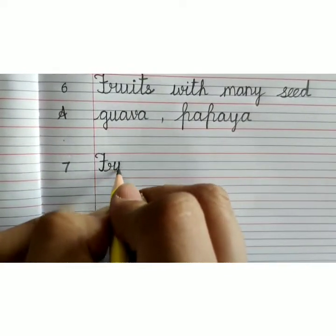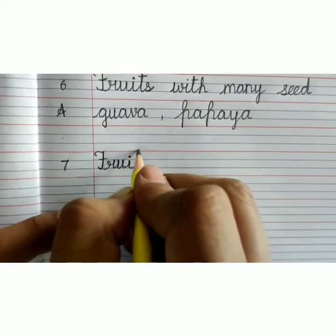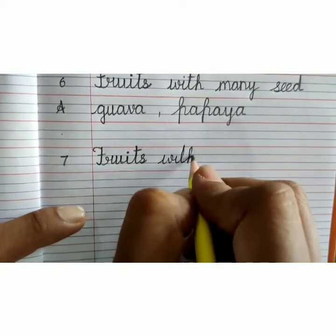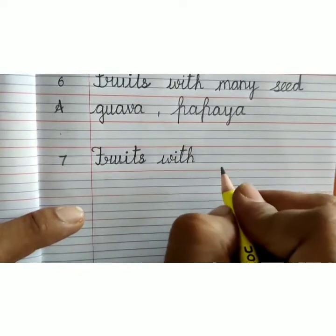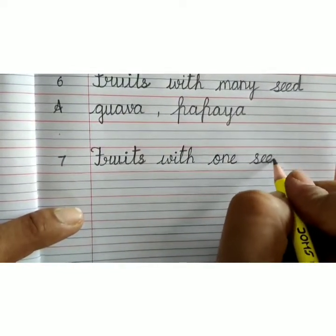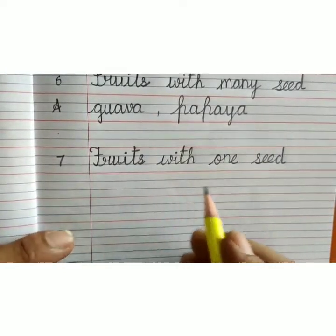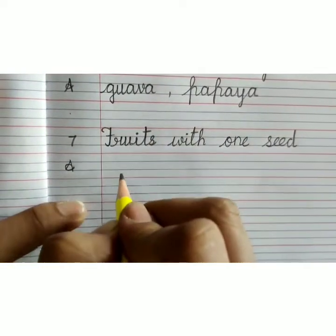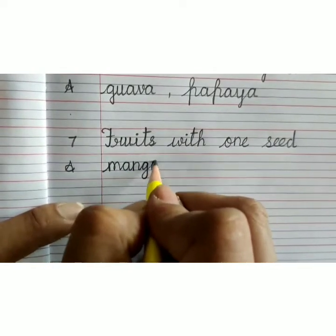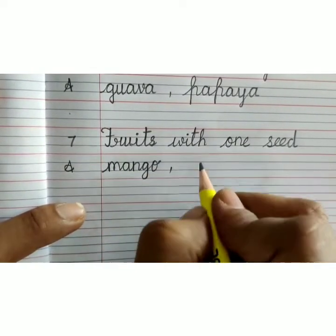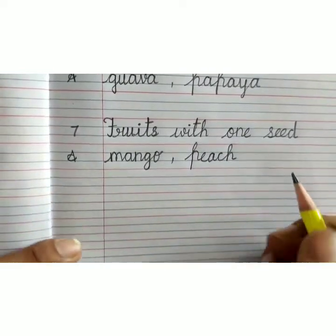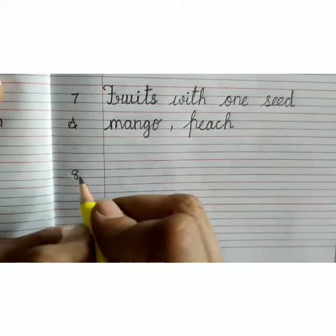Capital F-R-U-I-T-S, fruits, with, W-I-T-H, with, O-N-E, one, S-E-E-D, seed. Fruits with one seed, answer: M-A-N-G-O, mango, comma, P-E-A-C-H, peach. Leave one line, number 8.